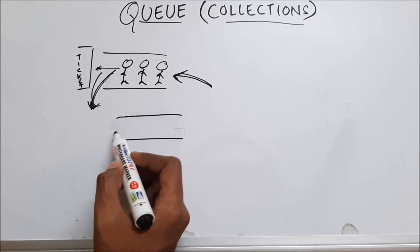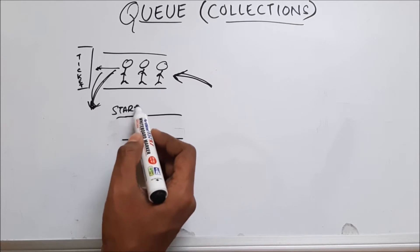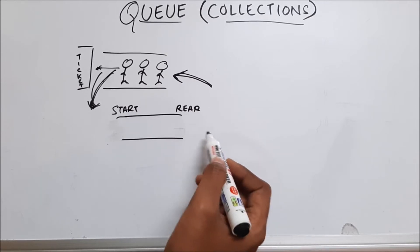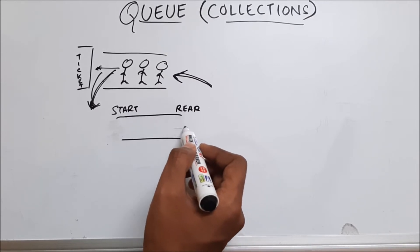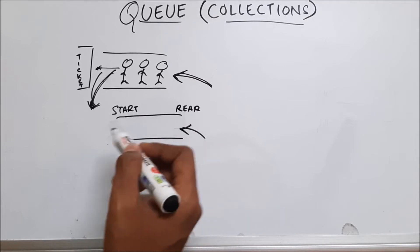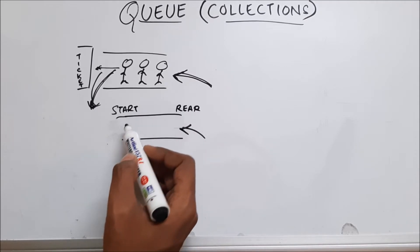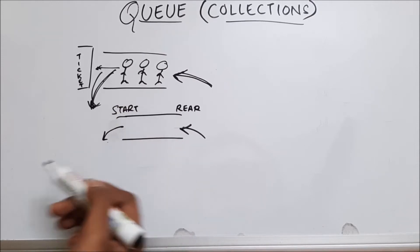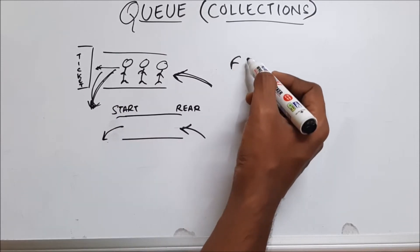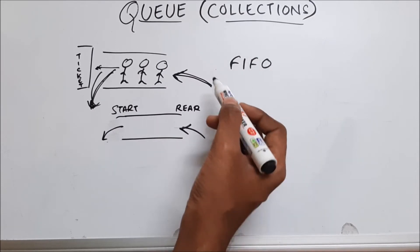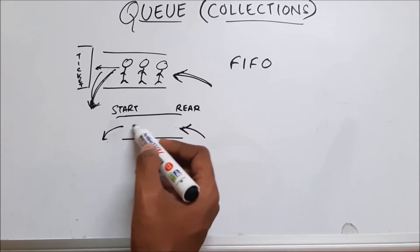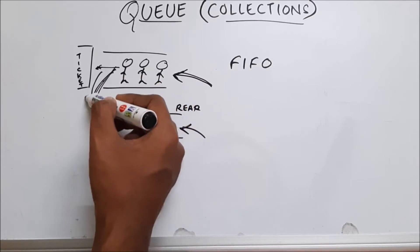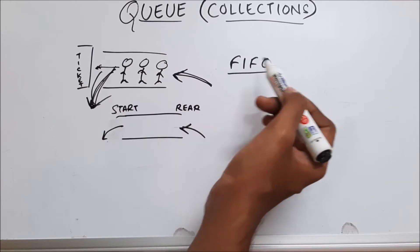Let's say this is a queue — this is the start of the queue and this is the rear end of the queue. The only way to put elements into the queue is from the rear, and the only way to remove something from the queue is from the start. The principle we discussed is called first in first out: the person who enters the queue first is the person who is going to get out first.